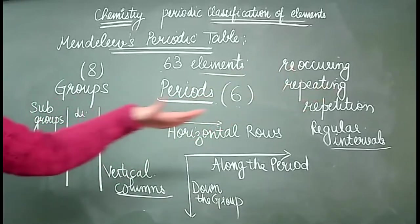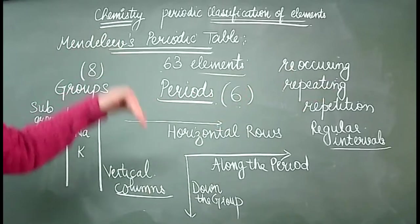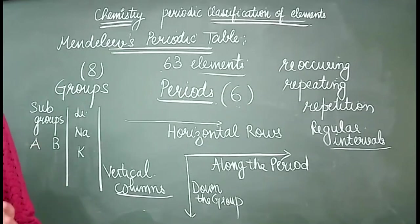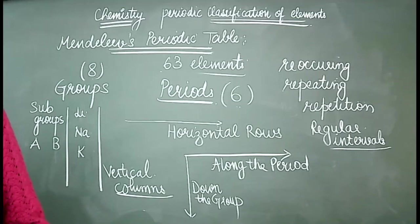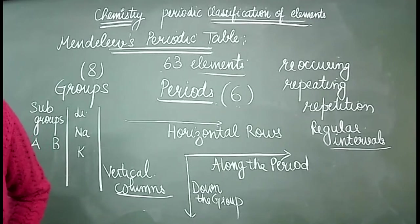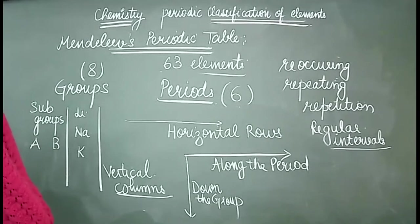Moving horizontally is movement along a period; moving vertically is movement down a group. Each group is further classified or subdivided into subgroups A and B. He only considered the compounds — oxides and hydrides — with oxygen and hydrogen, according to which he further classified his periodic table.